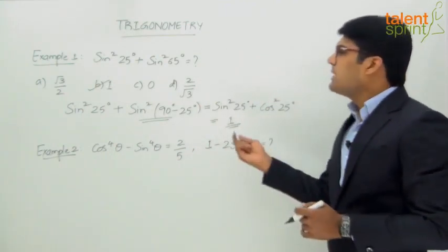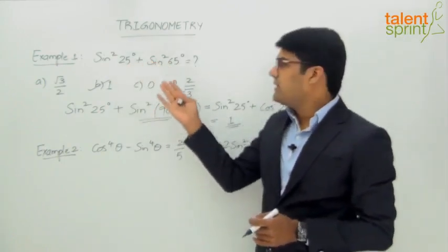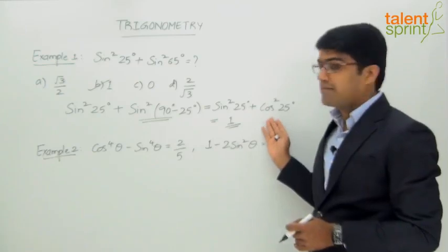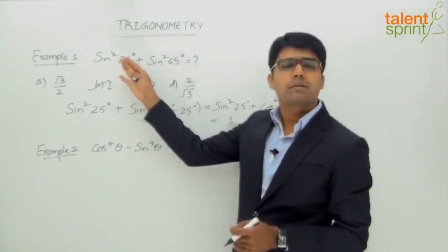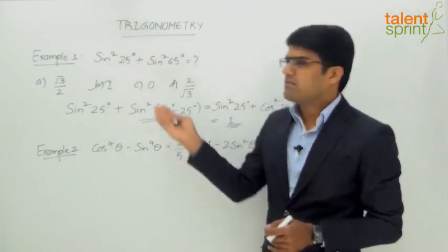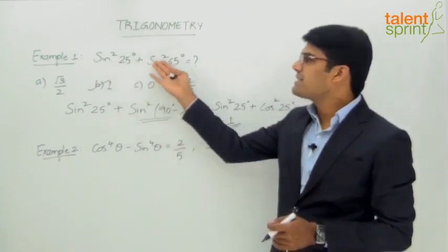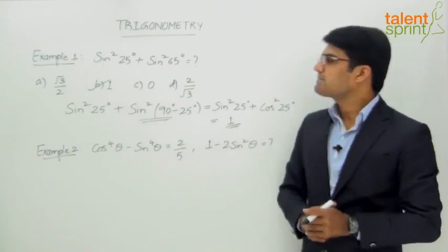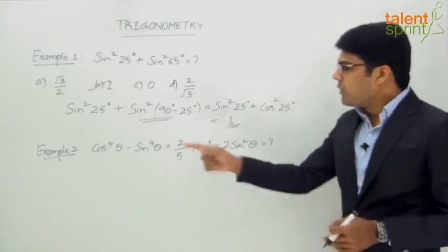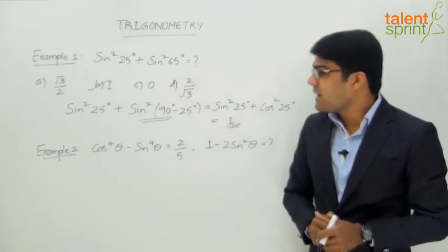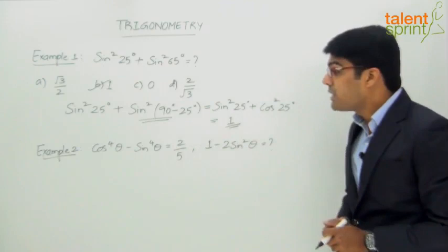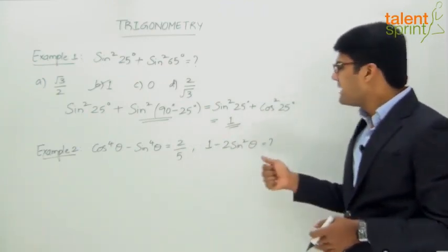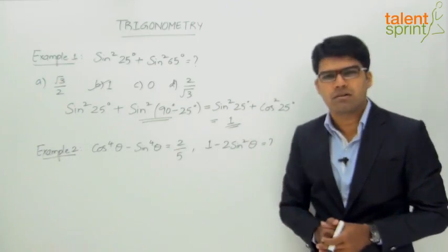The other way to do it is to convert sin²25° instead. Here we converted sin²65° as cos²25°, but alternatively sin²25° can be expressed as cos²65°. Even in that case we get cos²65° + sin²65° = 1. Moving on to the next example: it says cos⁴θ - sin⁴θ = 2/5, then 1 - 2sin²θ equals what?